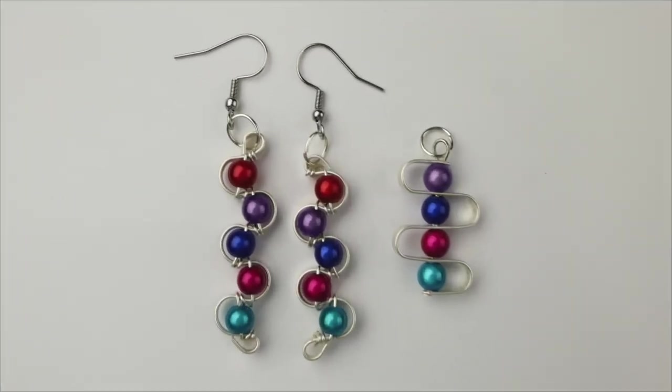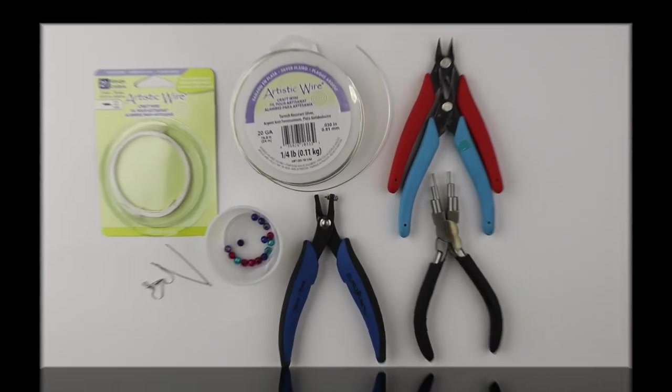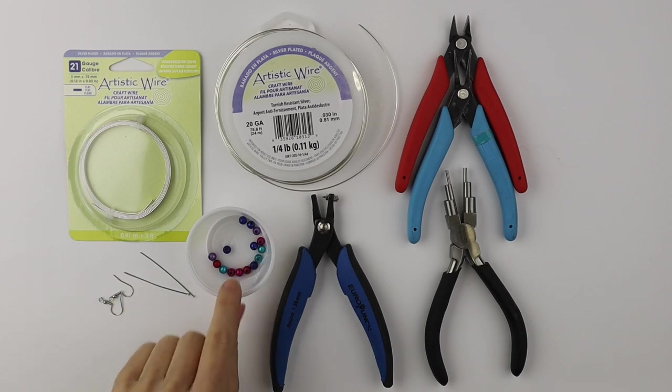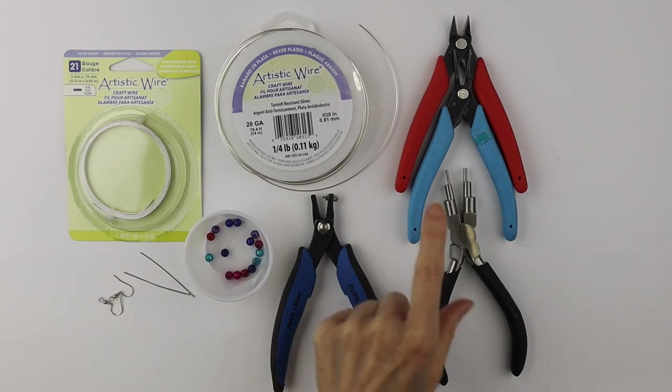Hey there, Heather Boyd Wire here. Today it's Tip Tuesday. I'm making earrings and pendants with flat wire and miracle beads. I'm using three millimeter flat artistic wire, 22 gauge wire, head pins, hooks, beads, and my tools.